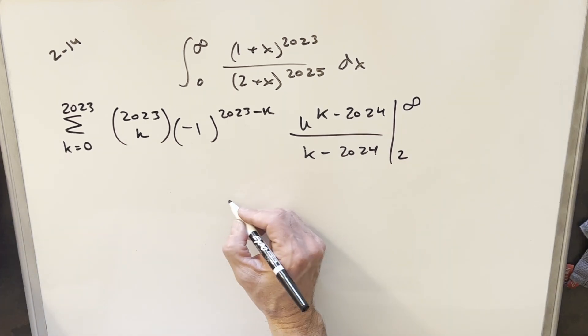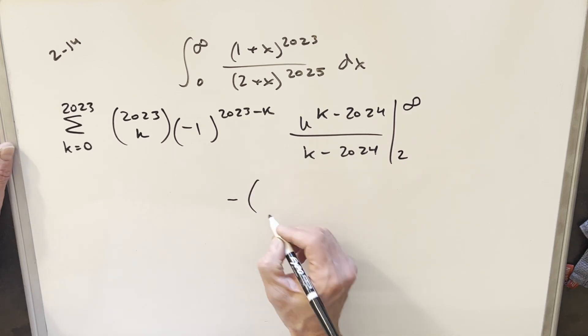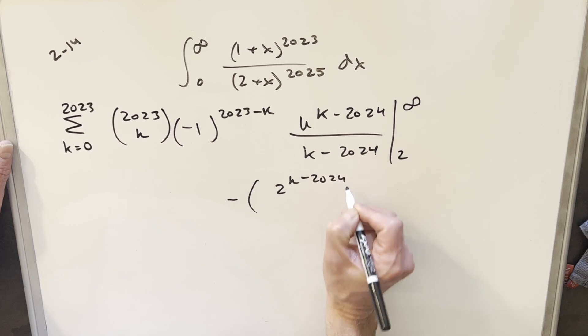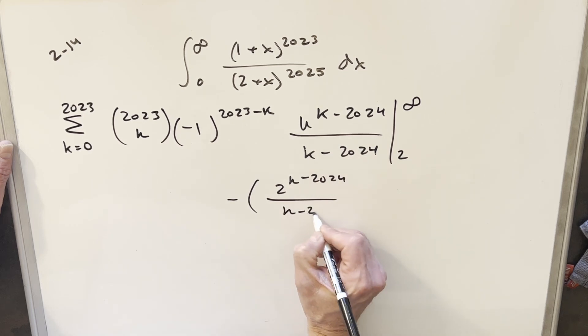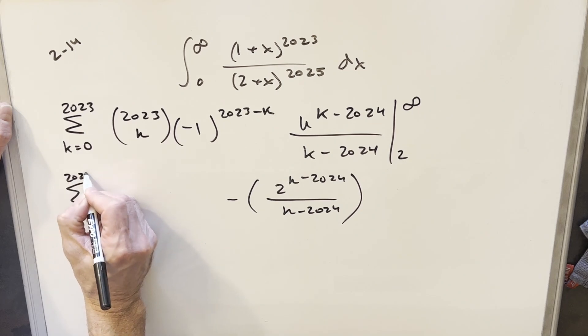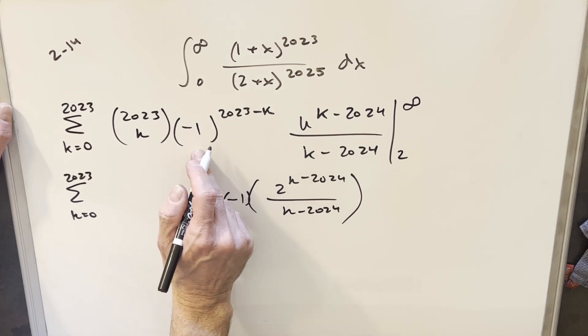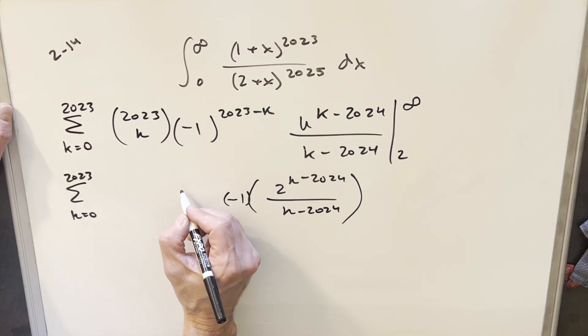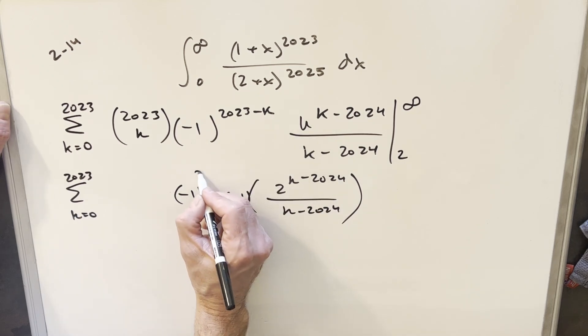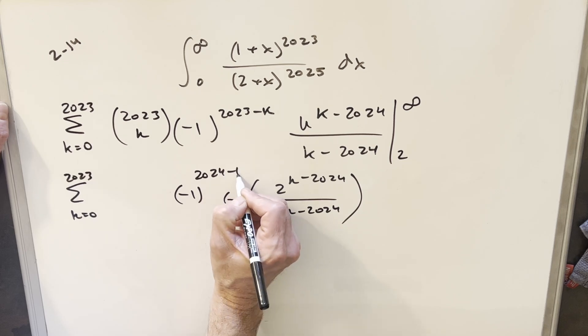So when we plug in two, I'm just going to bring a minus out here, because when we evaluate, we're going to have the first term minus the second term. And then this is going to become 2k minus 2024 over k minus 2024. But then when I rewrite this with the series, what's going to happen is I can write this as a minus one, and then combine it with this minus one right here. So when I do that, I can actually write this minus one and just add one on here. So this becomes 2000. So adding one in 2023, we end up with 2024 minus k.